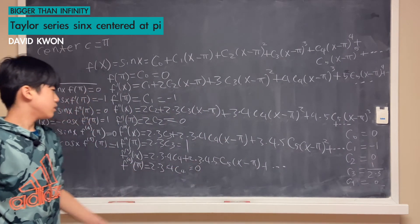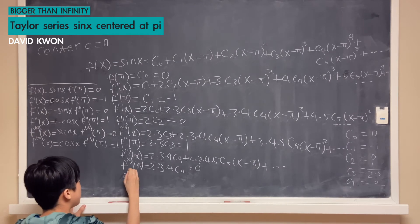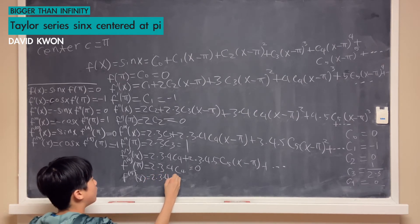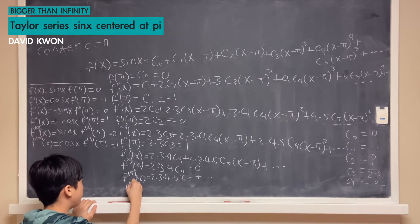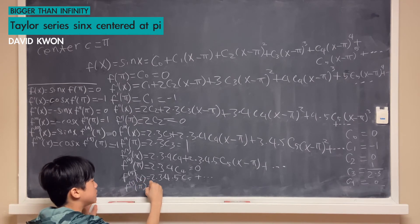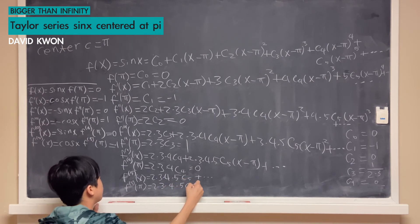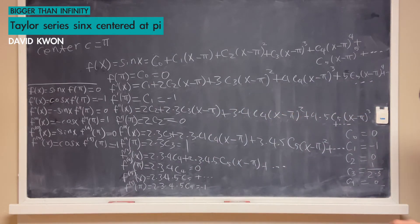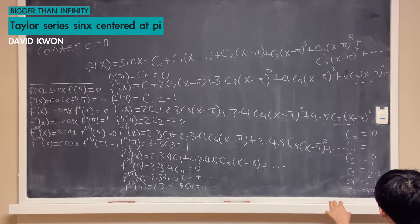Differentiating one last time, we get f⁽⁵⁾(x) equals 2·3·4·5·c₅ plus dot dot dot. Setting x equal to π, we get f⁽⁵⁾(π) equals 2·3·4·5·c₅. Since f⁽⁵⁾(π) equals negative 1, our c₅ equals negative 1 over 2·3·4·5.